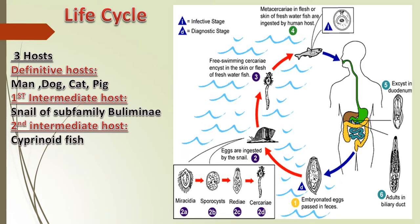Understanding the life cycle through a diagram: definitive hosts are man, dog, cat and pig. The first intermediate host is the snail of the subfamily Buliminae, and the second intermediate host is the cyprinoid fish. Metacercaria larvae are found in the skin or flesh of the fish. When taken up by humans, they excyst in the duodenum, and adults reside in the bile duct, where fertilized or embryonated eggs are formed. These embryonated eggs give rise to the first larval form, the miracidium.